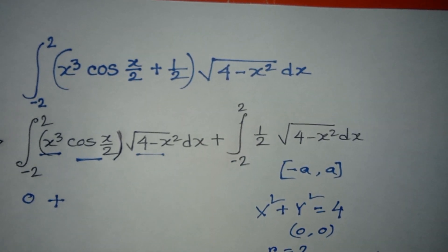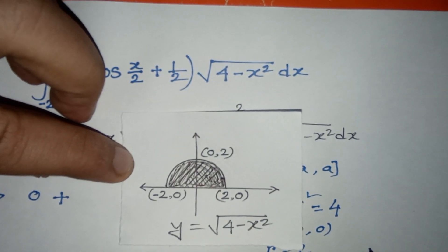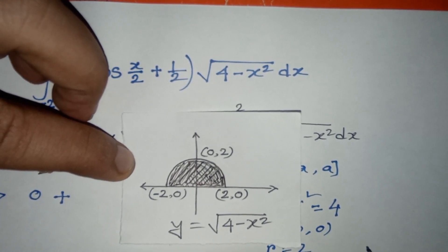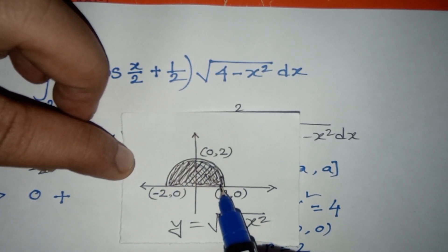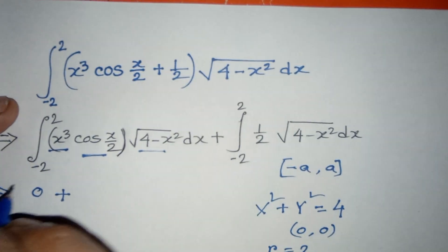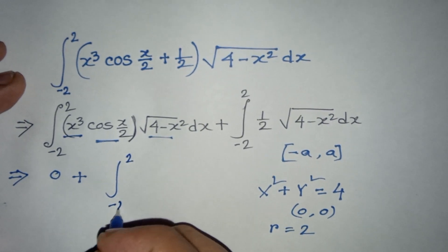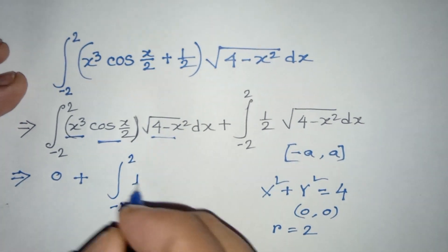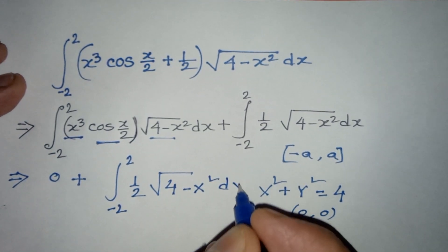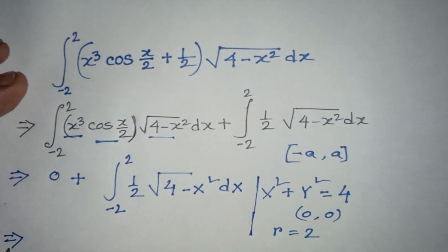So we can draw the graph y = √(4-x²) as being a semicircle. The integral from -2 to 2 of (1/2)√(4-x²) dx equals... it's a semicircle.